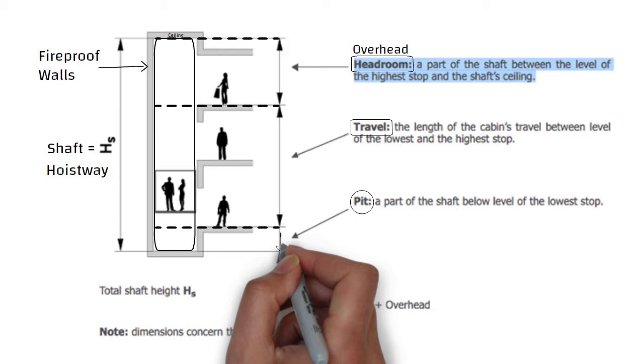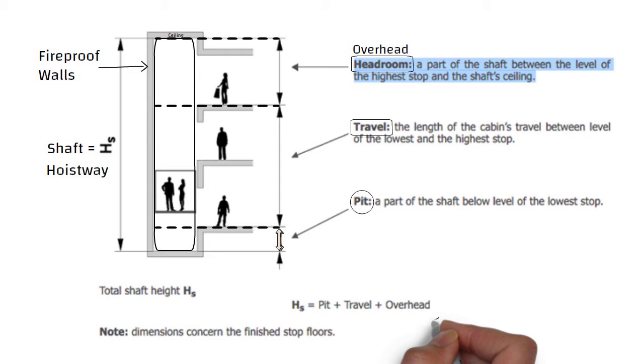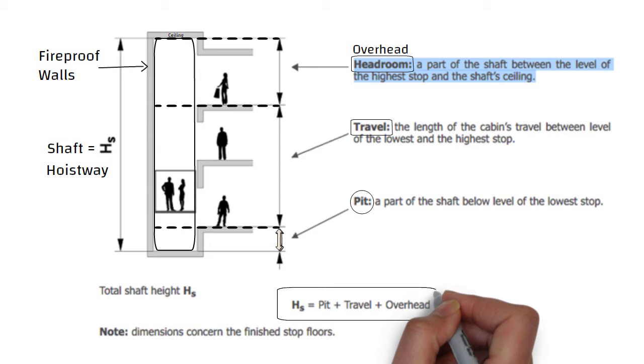So if we want to calculate shaft height, it is equal to Pit plus Travel plus Overhead.